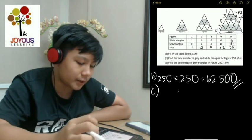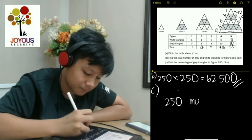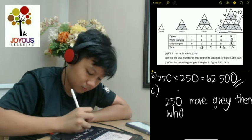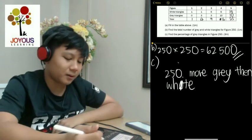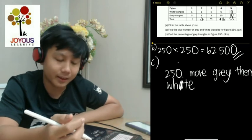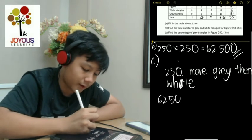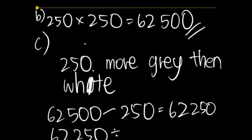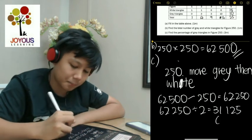So in figure 250, there are 250 more gray triangles than white. Now that you know the total number of triangles and how many more gray than white there is, you can find out how many gray there is. First, you need to take 62,500 minus 250, which is equal to 62,250. Then you need to divide it by 2 to find out the number of white. So 31,125. That is the number of white triangles.